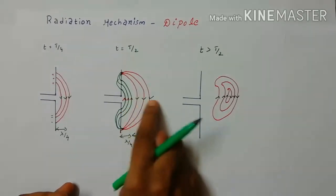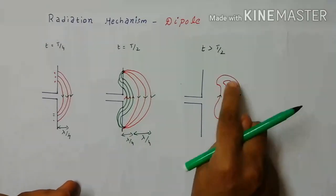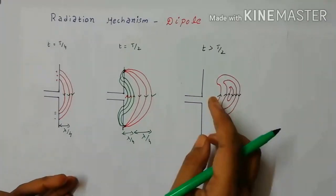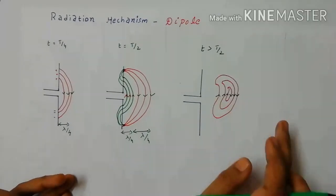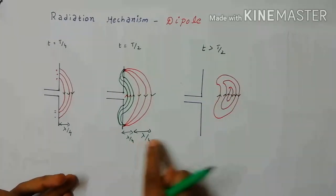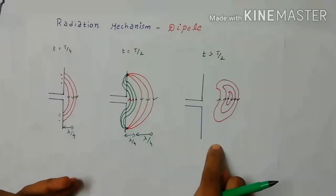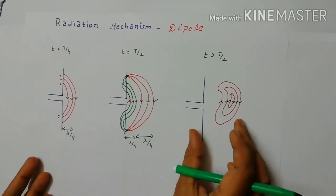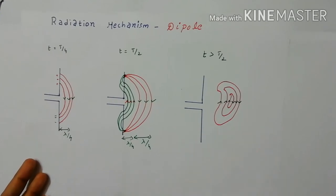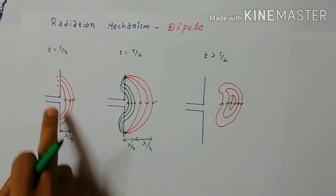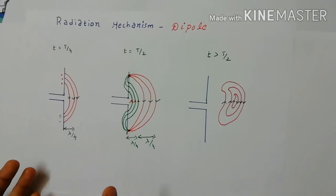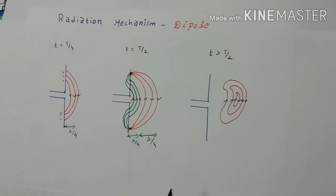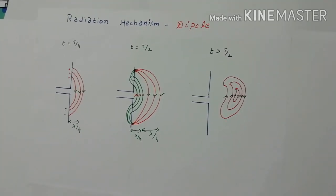In free space, the three positives and three negatives combine into closed loops. Since there is no holding charge from the antenna, they automatically detach. This happens after t/2 seconds. In just three steps, the radiation mechanism from a dipole is explained. The fundamental point is that opposite charges attract, and from that concept this dipole radiation mechanism was designed. Thanks for watching this video.